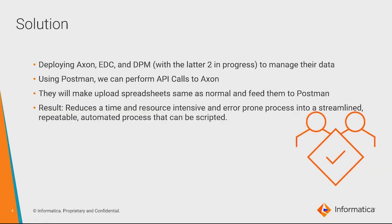To shore up their data governance program, this customer deployed Axon, EDC, and data privacy management. Using a third-party application called Postman, we can connect to Axon and place information there using the same Axon bulk upload spreadsheets provided in the UI. We feed these through Postman and make field mappings exactly like in Axon. If changes are made to this data, we want Axon to reflect the most up-to-date information. Without our solution, they would have had to go into Axon manually and perform bulk uploads whenever information changed, thus reducing that resource-intensive process into a streamlined, repeatable, automated process that can be scripted.